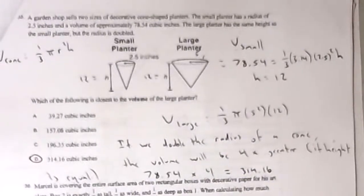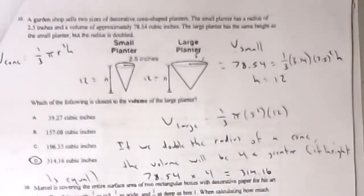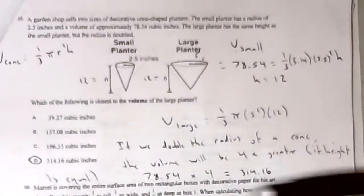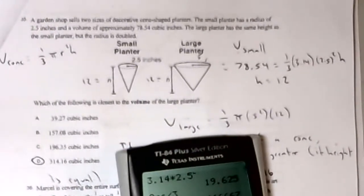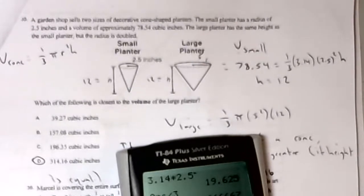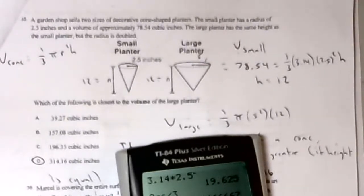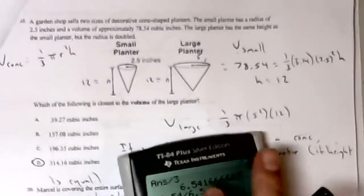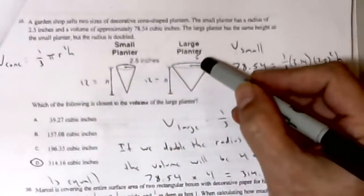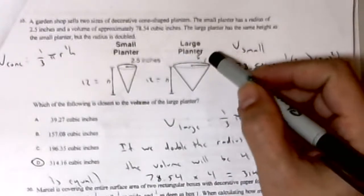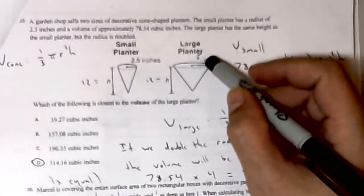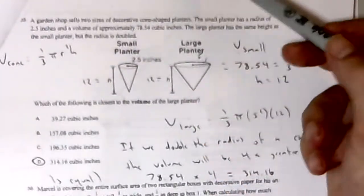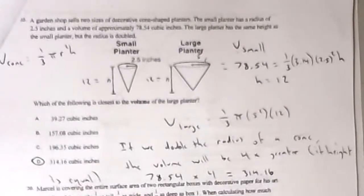There is an easier way to do this. Let me do 314.16 divided by the volume of the small planter, and that gives me 4. Basically, if I double the radius, that's going to be 4 times the volume, and then I just do 4 times 78.54, and that gives me 314.16.